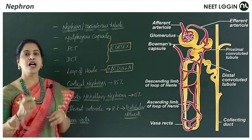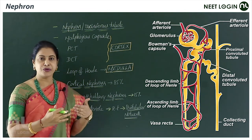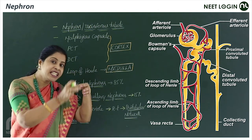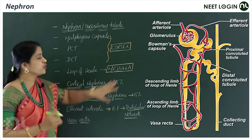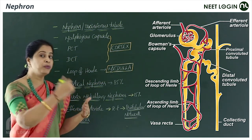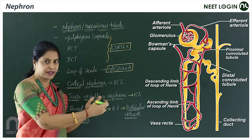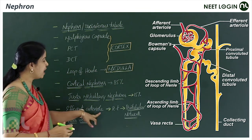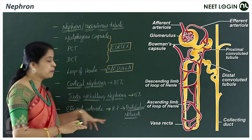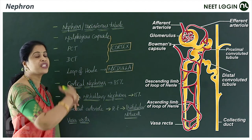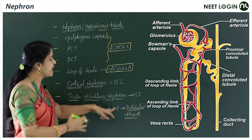The minority are juxtamedullary nephrons, which have a very long Henle's loop with the major part present in the medulla. The afferent arteriole forms the glomerulus and leaves as the efferent arteriole, which then surrounds the renal tubule (PCT and DCT), forming the peritubular network.